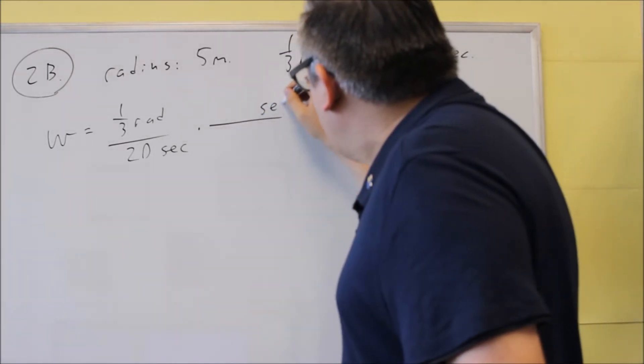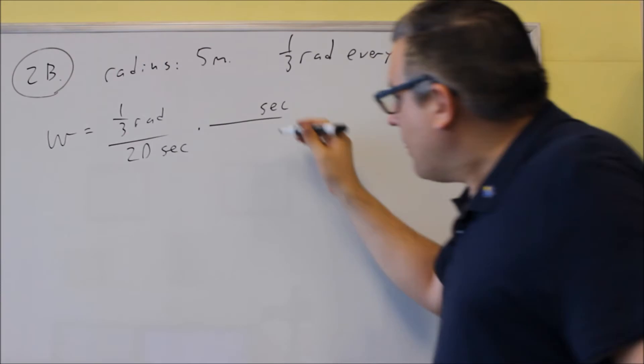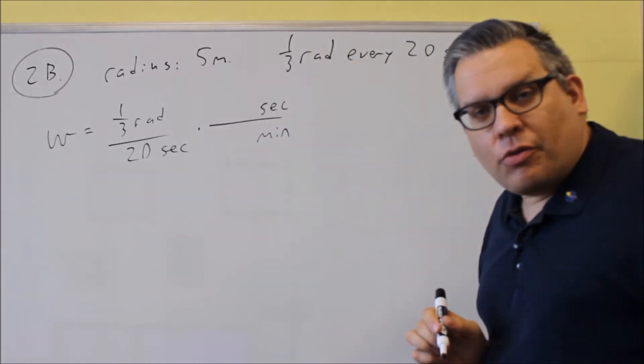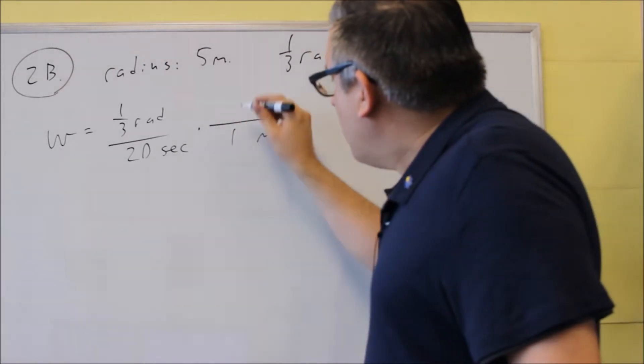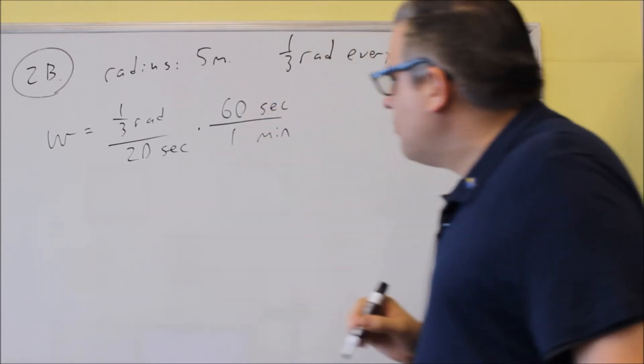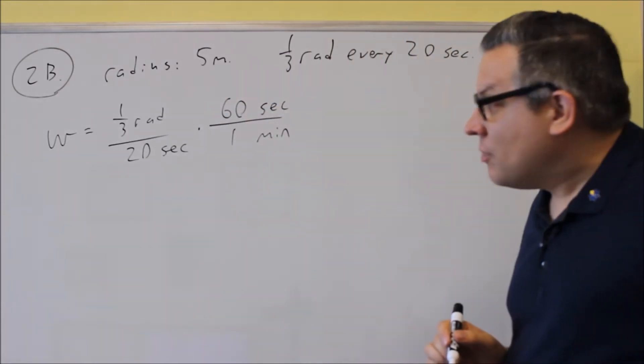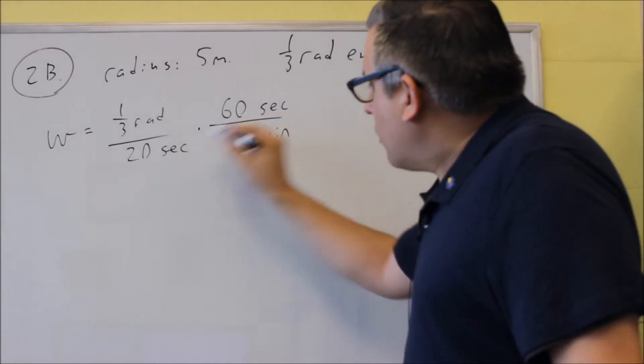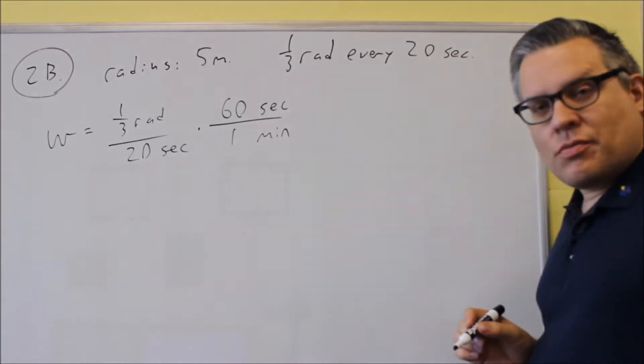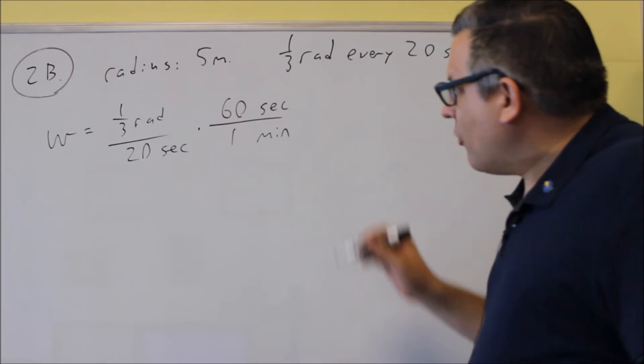The seconds, we're going to put on top. And the minutes, we're going to put down below. So, 1 minute is the same thing as 60 seconds. So that will allow us to cancel out the seconds. And then we'll have radians per minute, which is what they're asking us for.